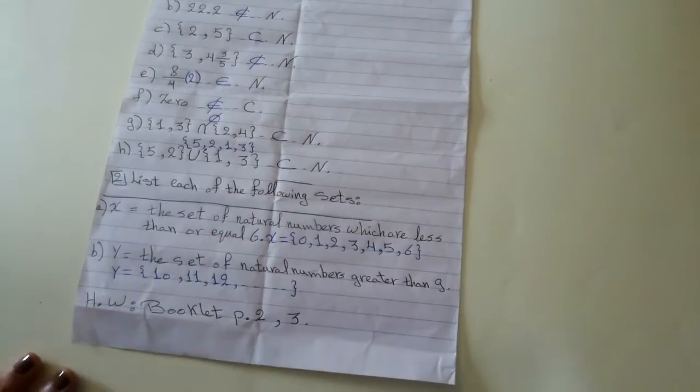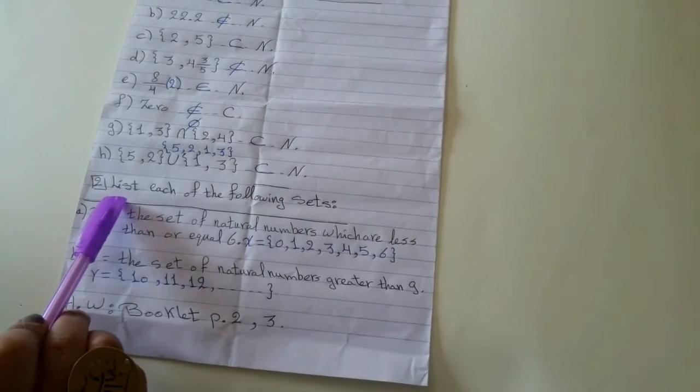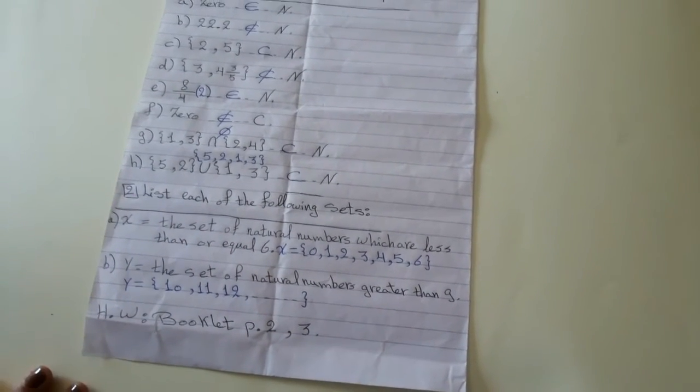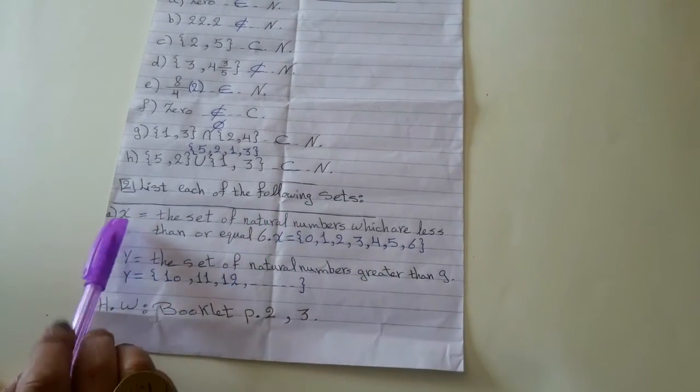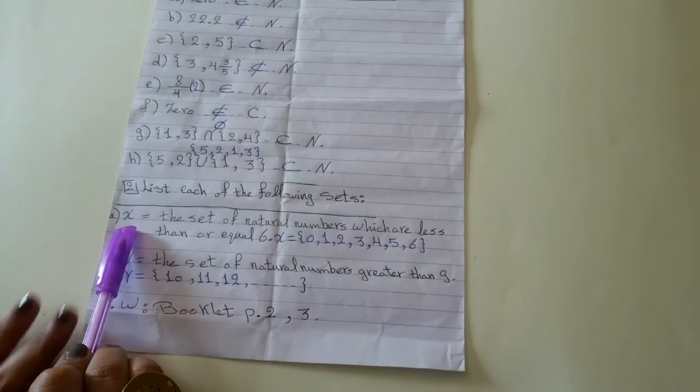List each of the following sets. What the meaning of list? List, I will make listing method. I will write the name of the set at the first and the element beside two, between two braces.